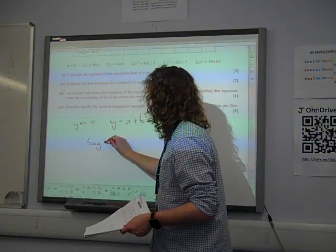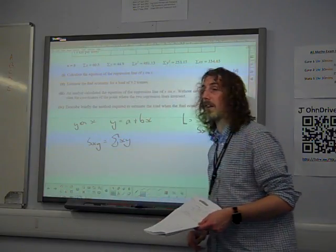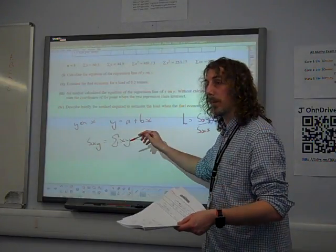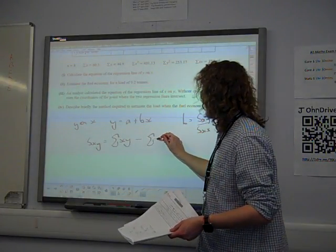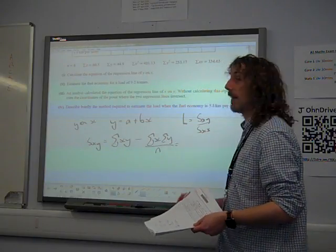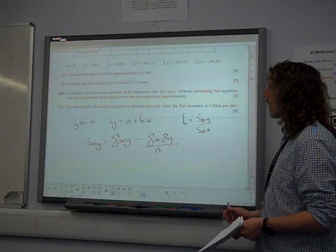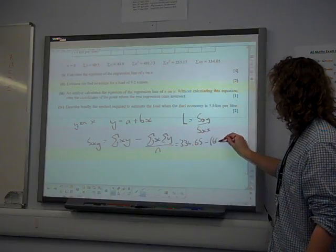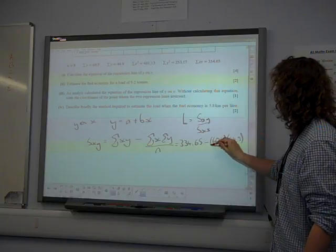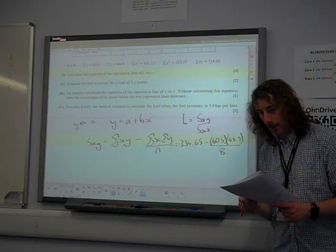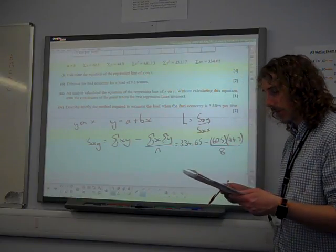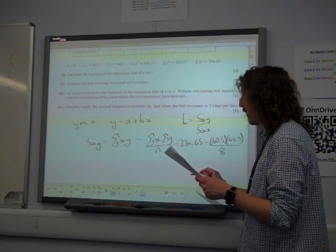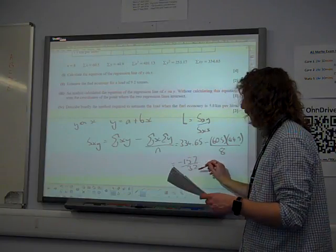So Sxy is, according to the formula booklet, sigma xy. We've never talked about it because you should never use it. Sigma xy is 334.65 minus sigma x times sigma y divided by n, which is 8. And that gives me minus 157 over 52 as an exact value.